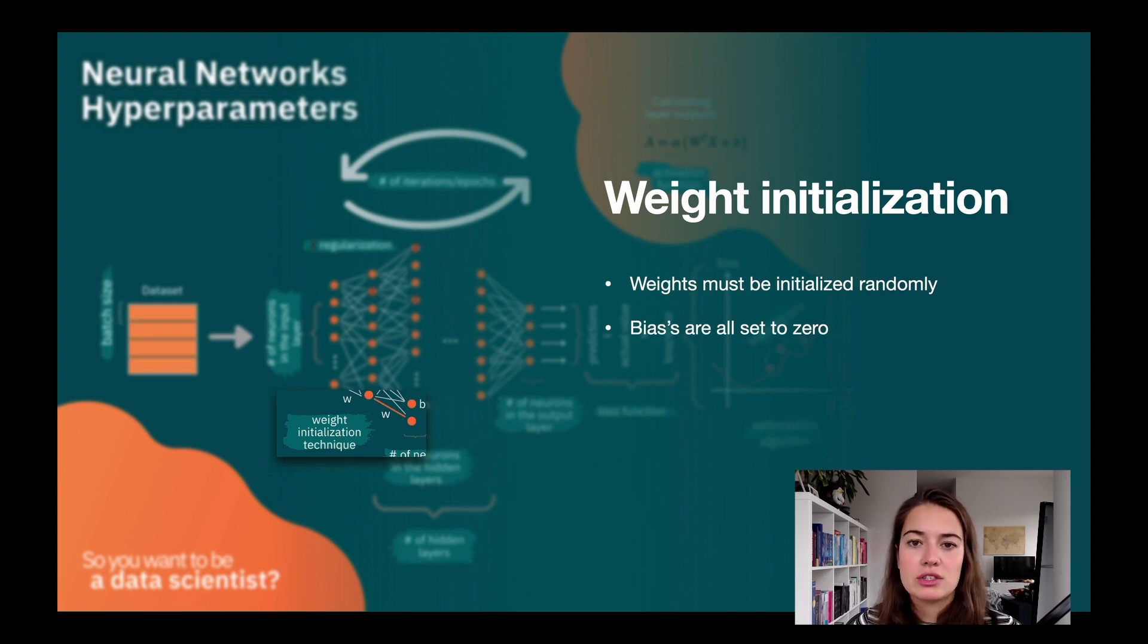For biases, they're initialized to zero most of the time. Weights are not set to zero because if we do that, they're all going to be updated at the same time in the same manner. Then this whole network is only going to be as good as one neuron. That's why we initialize the weights to be random.